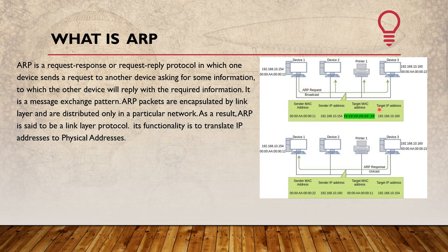At the MAC address level, this is a broadcast. When you are not aware of the destination MAC address but know the IP address, the ARP request is sent as a broadcast so that all devices on the network can receive it, and the correct device will reply with its MAC address.